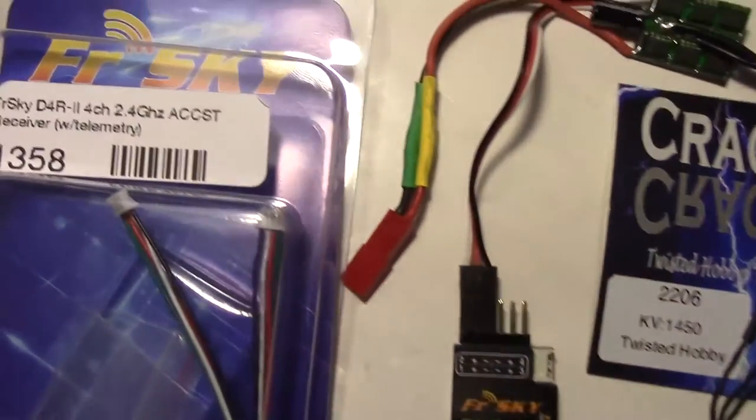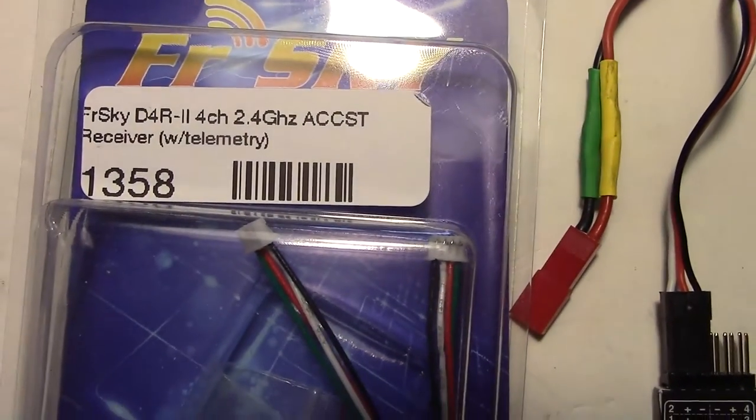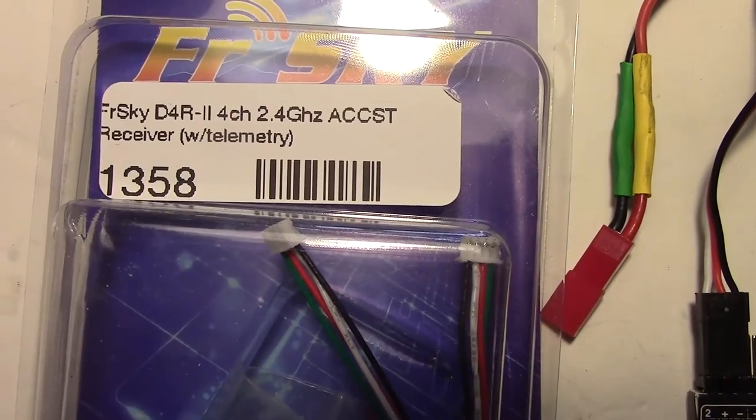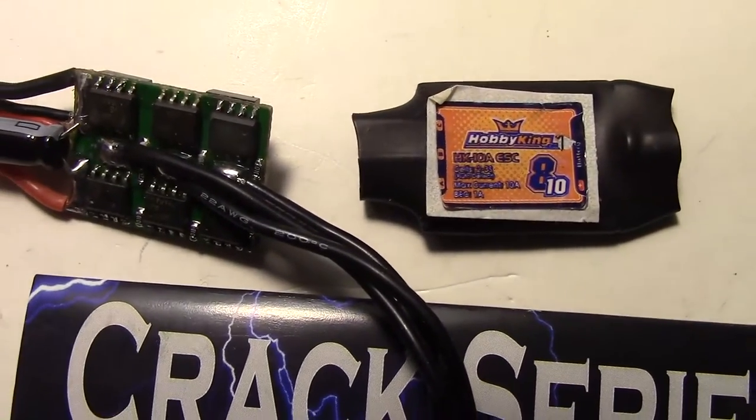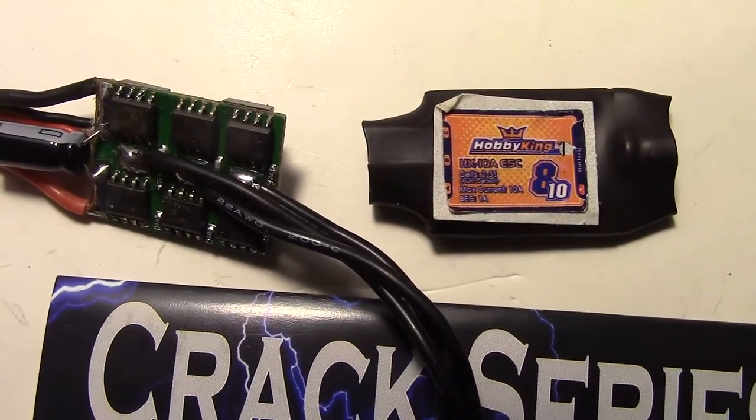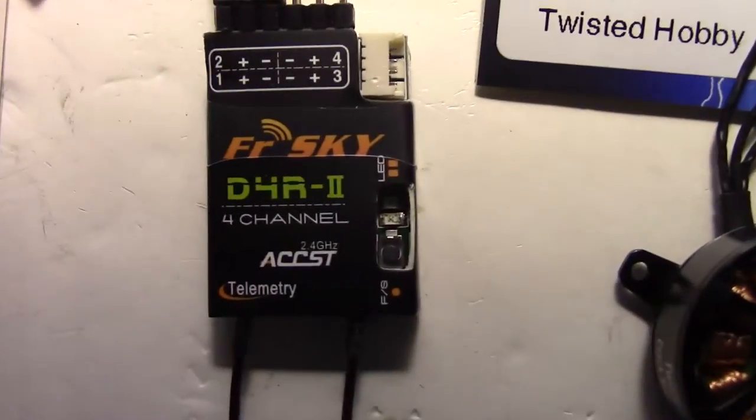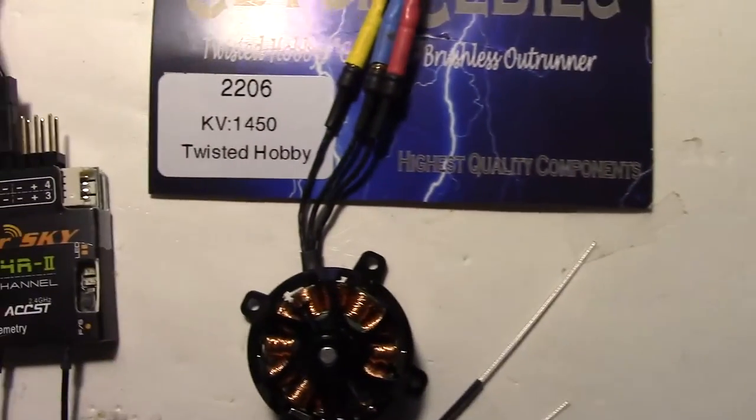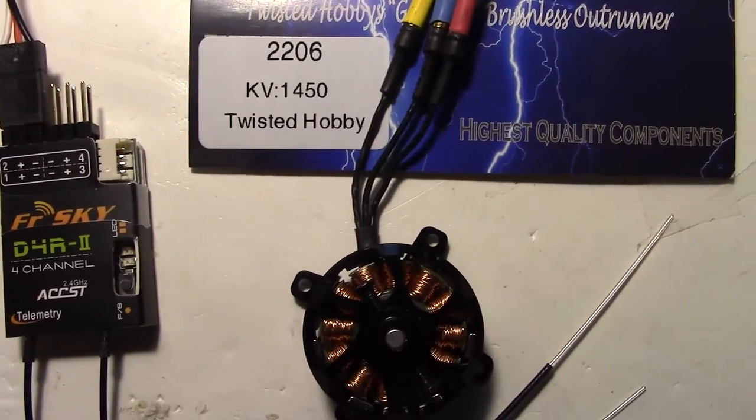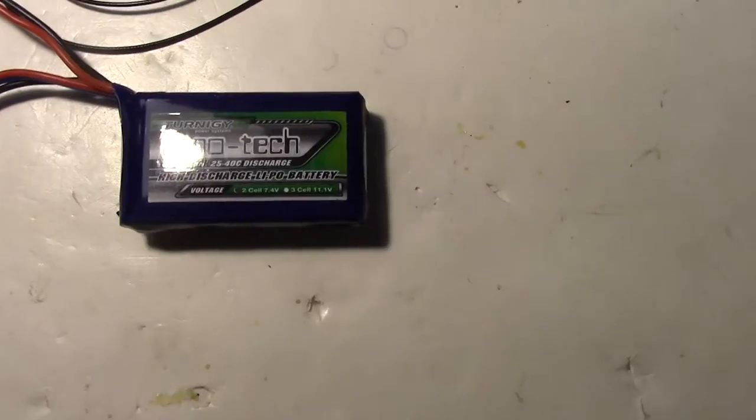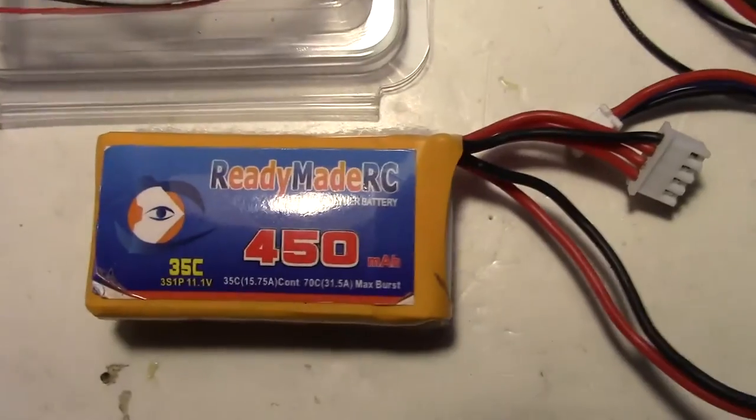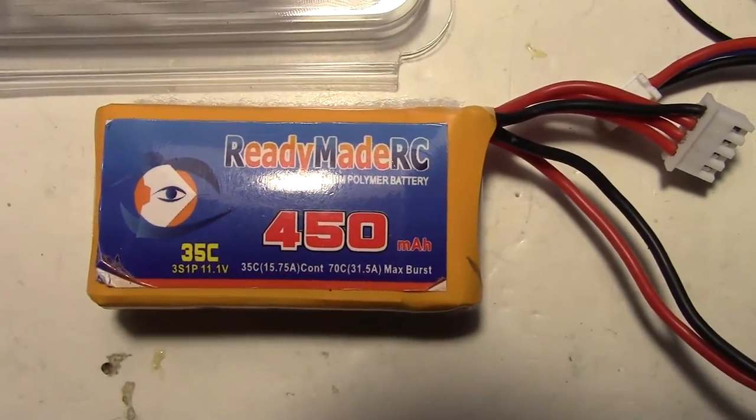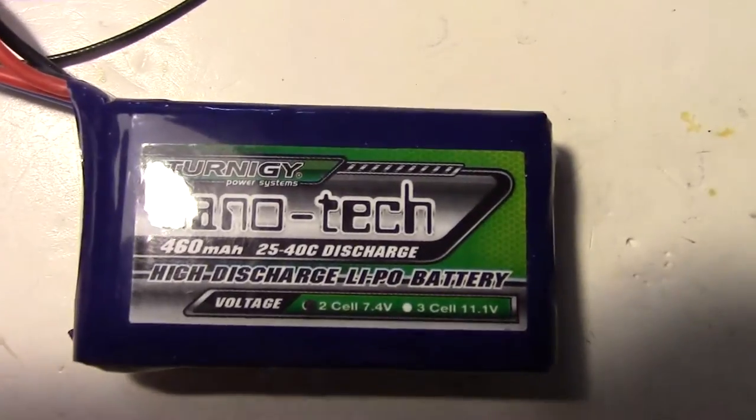Now for a closer view of the parts. Here is the FrSky D4R2 receiver, the HobbyKing ESC, and the Crack Series motor. Then we have the two batteries: either a 3-cell like this one or a 2-cell like this one.